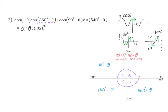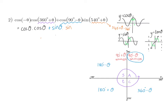cos(90 − θ) is a co-function, so sin and cos must swap. Since 90 minus is in the first quadrant where cos is positive, it changes to sin(θ). For sin(540 + θ), since 540 is bigger than 360, we subtract 360 degrees first, giving sin(180 + θ).